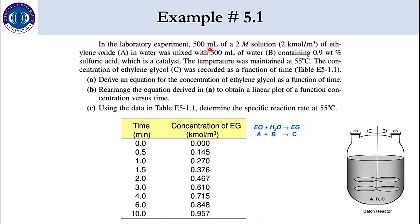So in the laboratory experiment 500 ml of a 2 molar solution 2 kmol per cubic meter of ethylene oxide A in water was mixed with 500 ml of water B containing 0.9 weight percent sulfuric acid which is our catalyst. Temperature is maintained at 55 degree centigrade and the concentration of ethylene glycol was recorded as a function of time as you can see in this table.